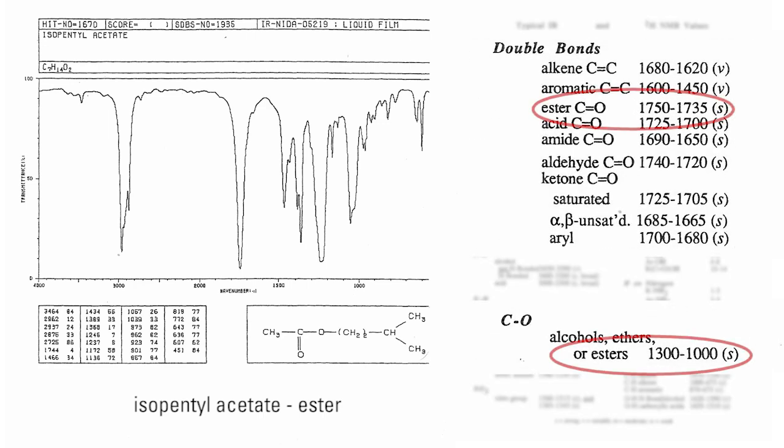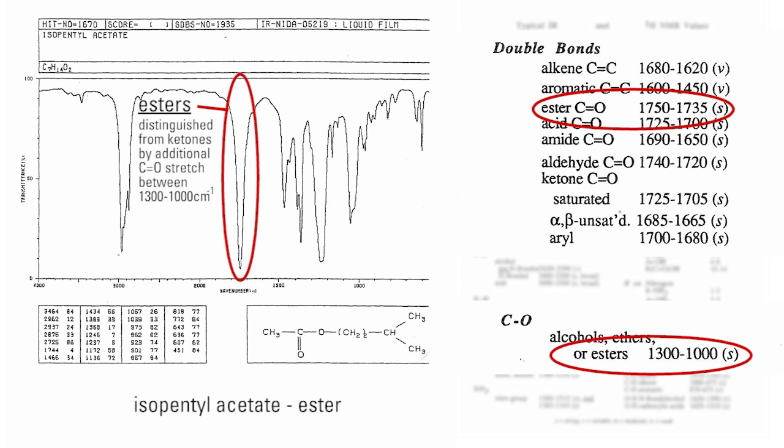Esters can be distinguished from a ketone because they have an additional strong CO stretching frequency that appears between 1,300 and 1,000 centimeters to the negative 1. For example, the IR spectrum of an ester such as isopentyl acetate can be interpreted by identifying its carbonyl C double bond O stretch at 1744 centimeters to the negative 1, and the CO stretch at 1389 centimeters to the negative 1.